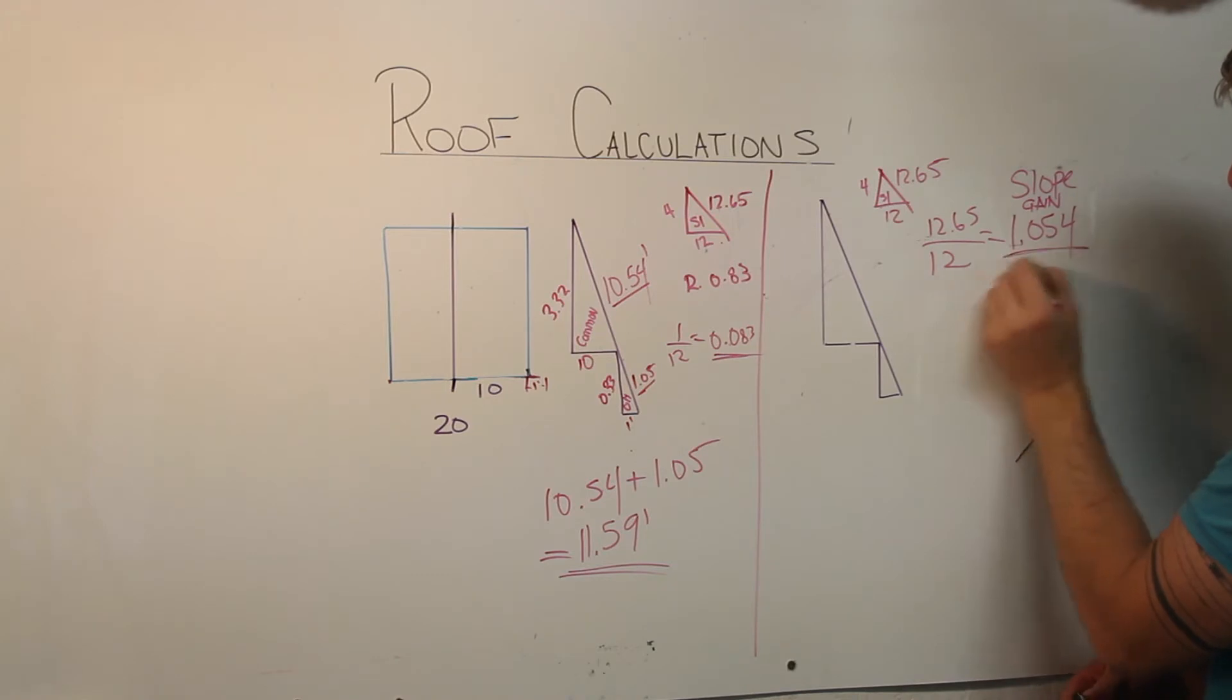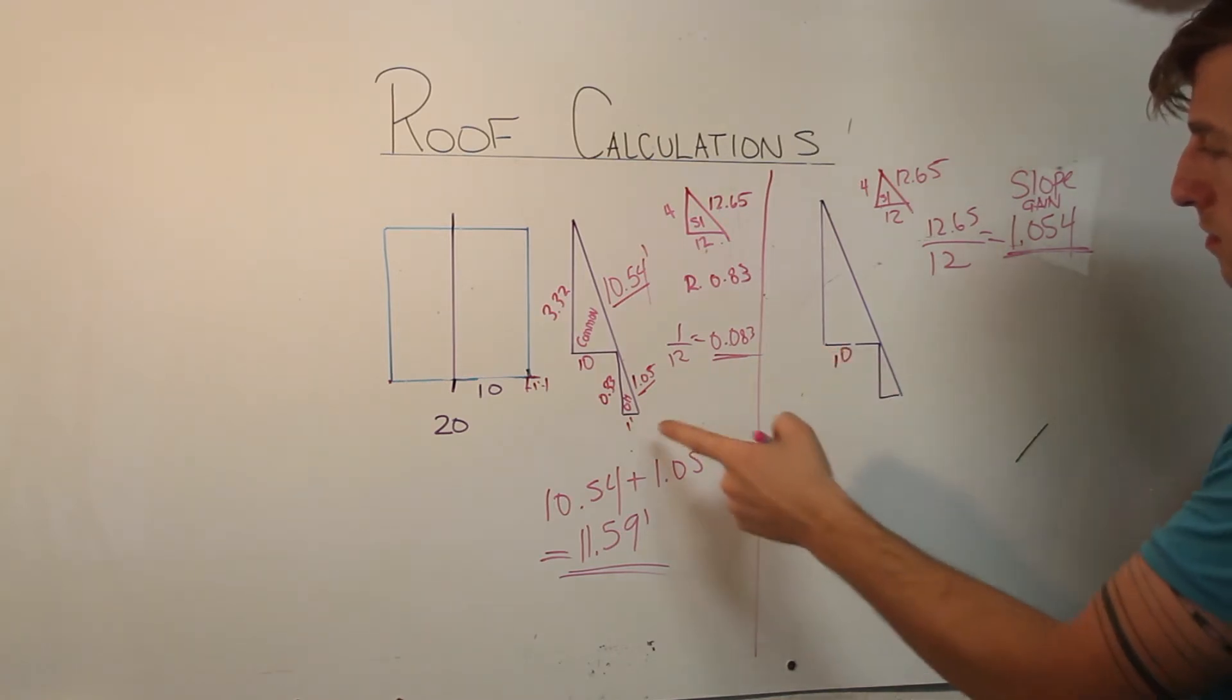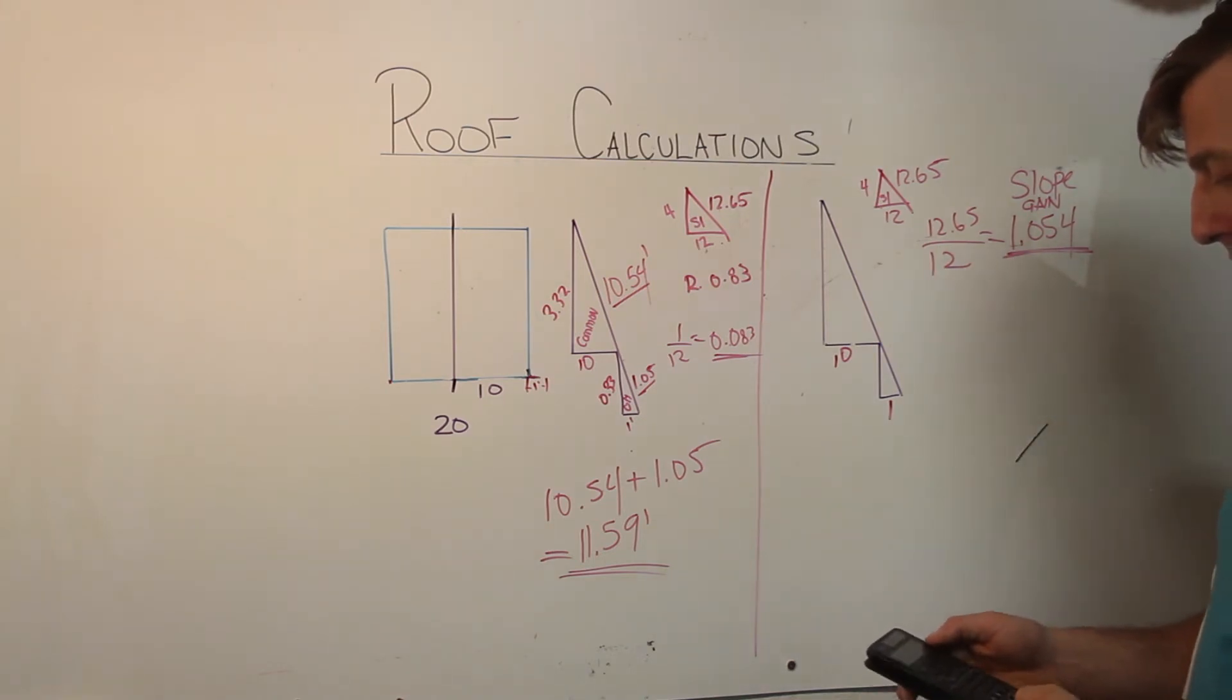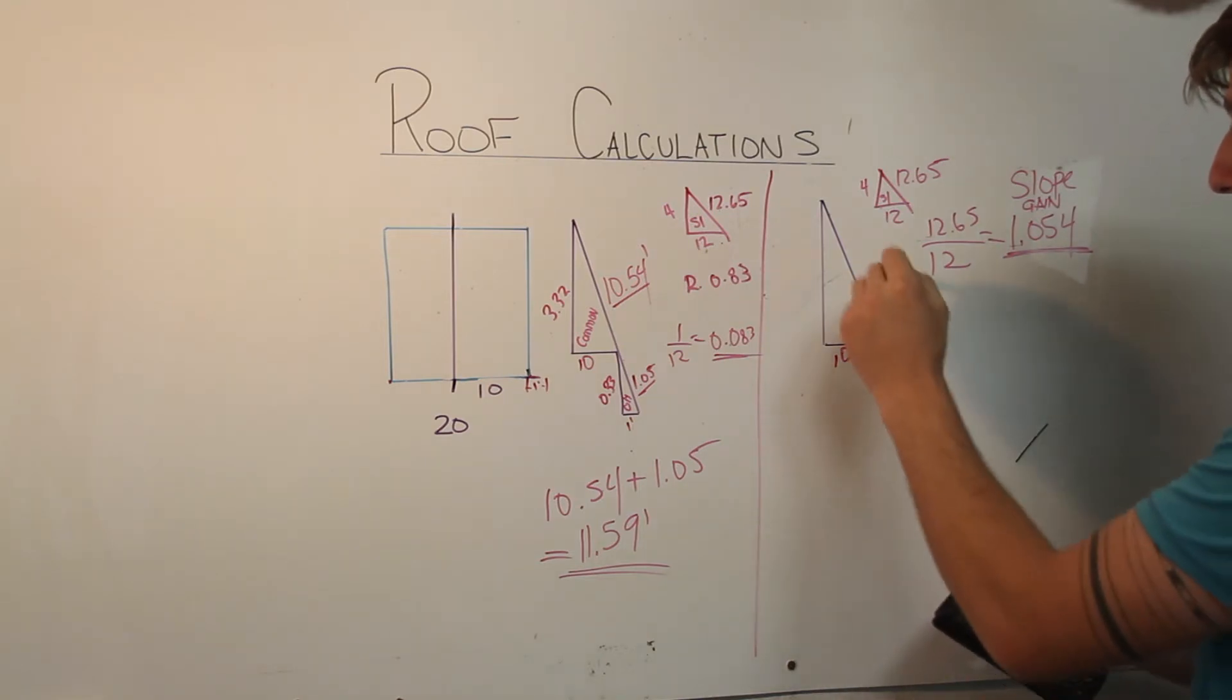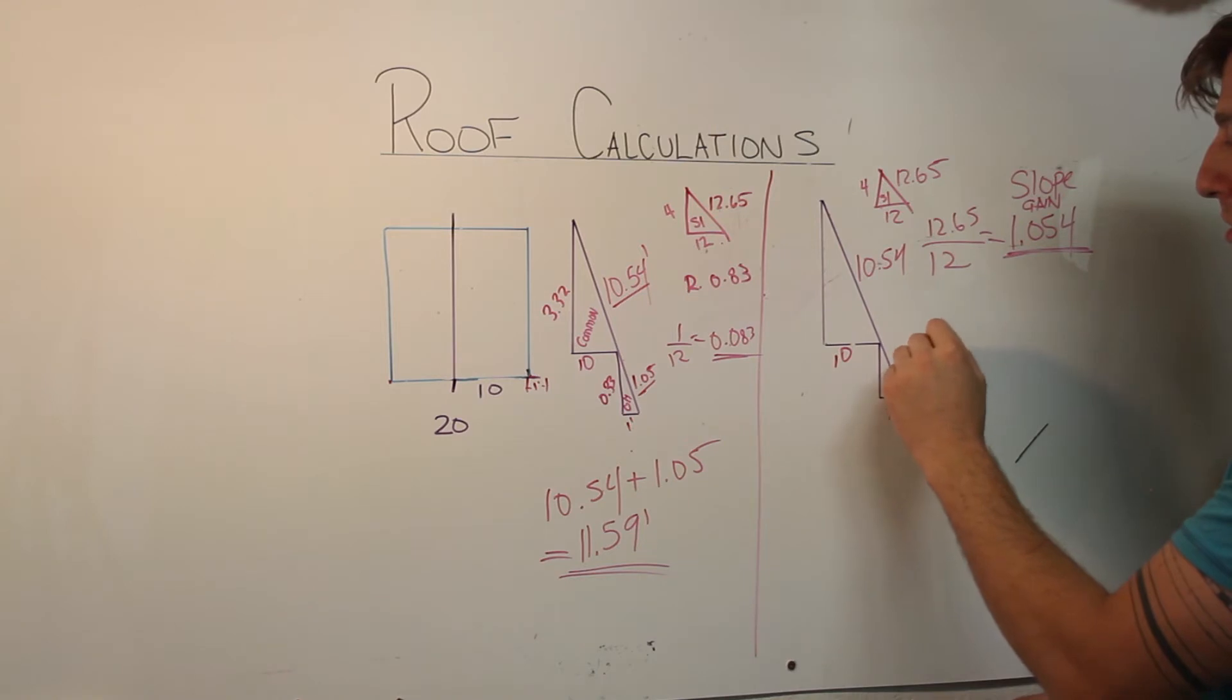So this is how easy this is. If you have your run, you multiply your run by the slope gain and it gives you the length of your rafter. 10 times 1.054 equals 10.54. 1 times 1.054 is 1.054.